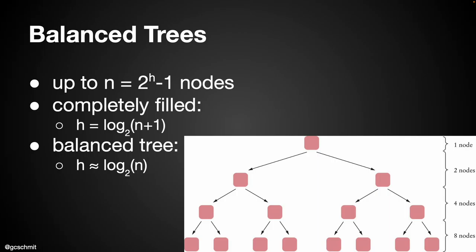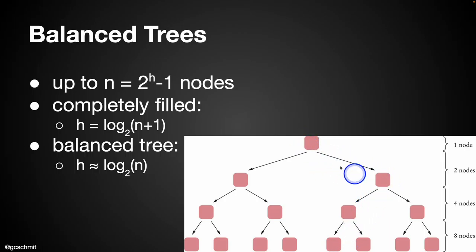Algorithms to balance trees are beyond the scope of this class, but they're not that bad. We're not going to worry about how to take an unbalanced tree and make it balanced — we're just going to be aware that to improve algorithm performance we want balanced trees, and that the height of the tree is proportional to log of the number of nodes. That's important as we think about traversing trees and the maximum time to get from the root to a leaf.